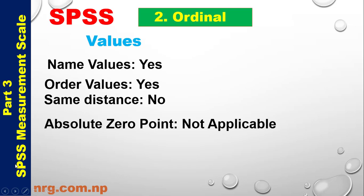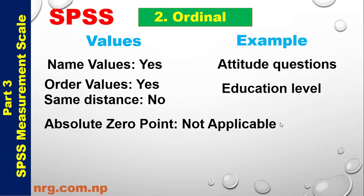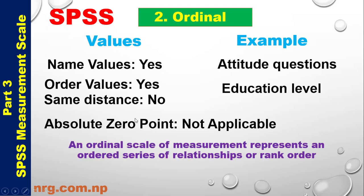Ordinal Scale properties — Absolute Zero Point: Not applicable. Examples include attitude questions and educational level. An Ordinal Scale of measurement represents an order or series of relationships, i.e., a rank order.